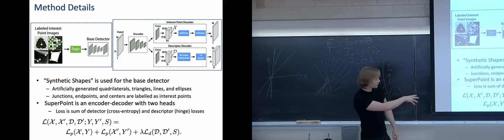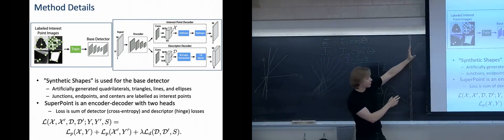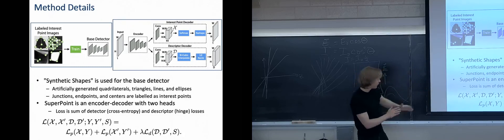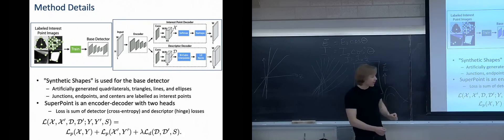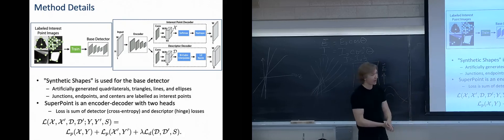Now the loss shown at the bottom is going to be the loss for the whole network, and it's actually combined. So it uses both the descriptor decoder loss and the interest point decoder loss. And those are basically just cross entropy for the interest point decoder and a hinge loss for the descriptor decoder. And the actual variables used at the bottom, we have x which is your image, and then x prime is just that same image transformed by some random homography, and then y and y prime are the corresponding pseudo-ground truth labels that were generated by homographic adaptation.